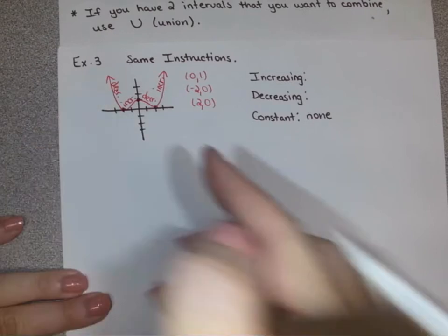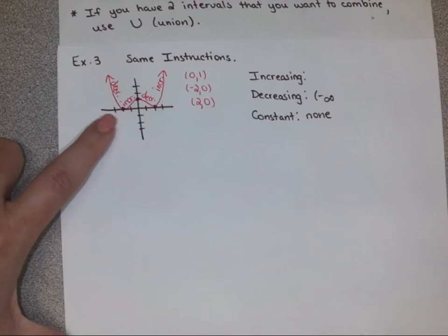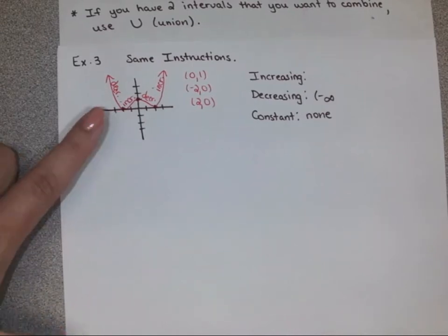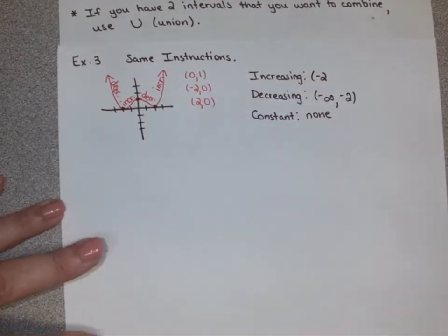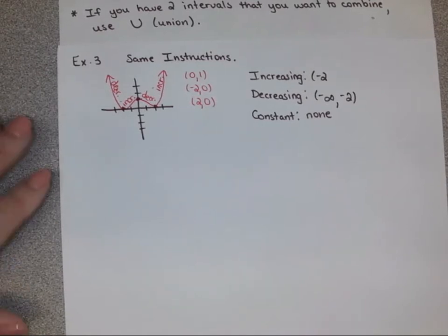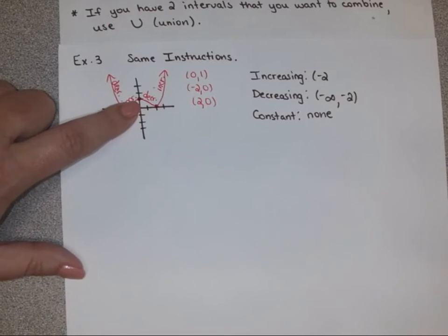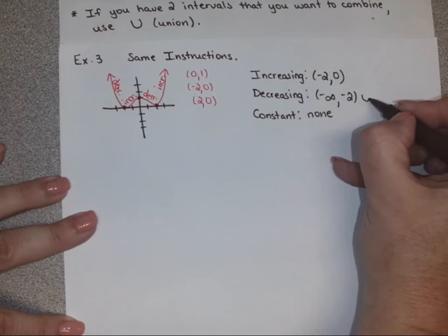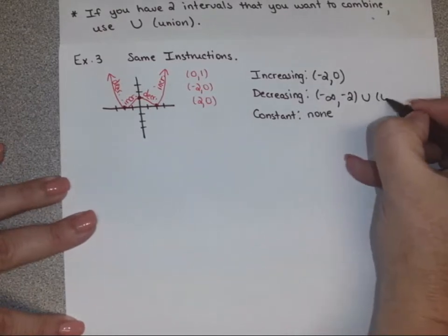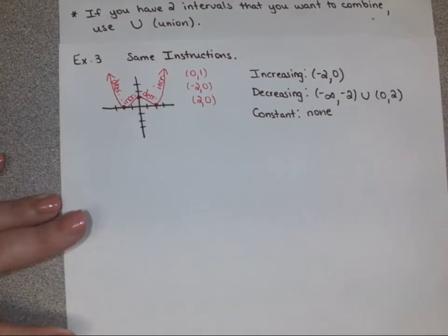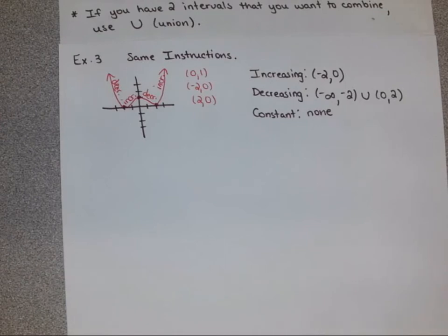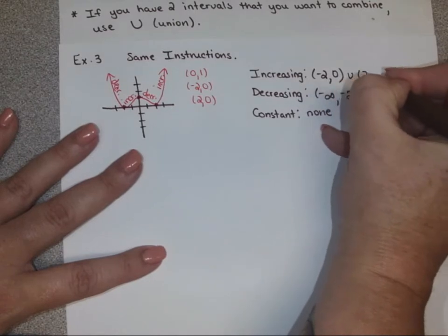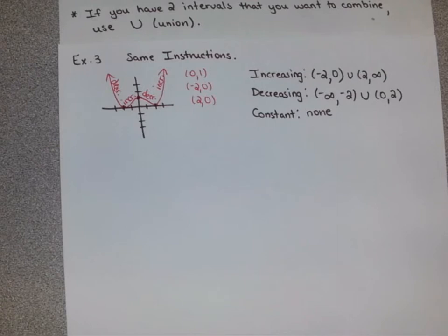Going from left to right and only caring about x values: decreasing from negative infinity until x equals negative two. Then we increase from negative two until x equals zero — we don't care that y is one there, we just care that x is zero. Then we decrease again from zero to two. Then we need a union symbol because we have another section — we increase from two to infinity, not because we're going up, but because we're going right.